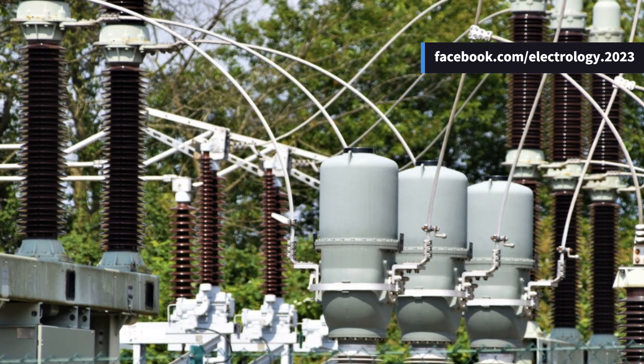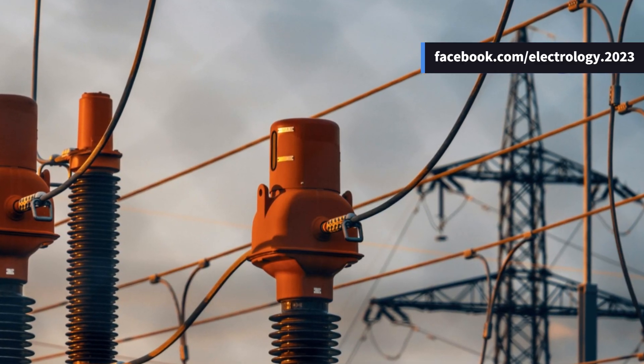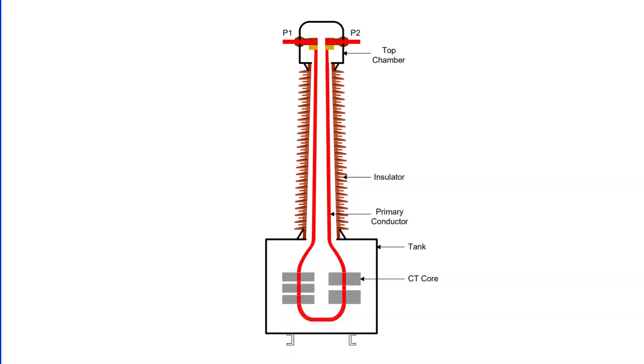And to understand that, we need to go straight to the core, quite literally, and see how they're constructed. In a dead tank current transformer, the primary conductor enters from the top, travels down through the tank, passes through the CT core, and then rises up again to exit from the top.